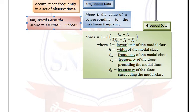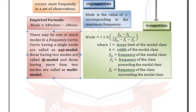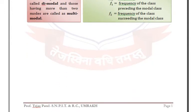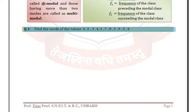Note that there may be one or more modes. In a frequency curve, those having a single mode are called unimodal, those having two modes are called bimodal, and those having more than two modes are called multimodal. Now let's see some examples.